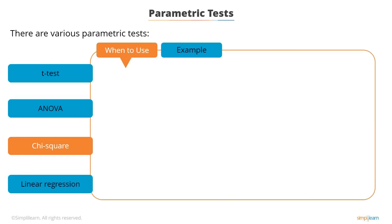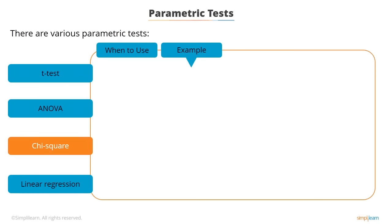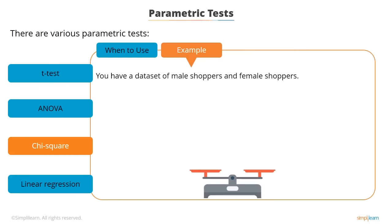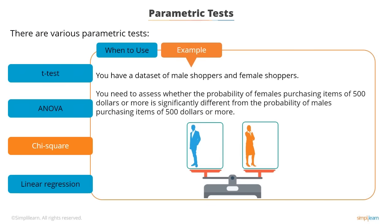Chi-square is a statistical test used to compare observed data with data you would expect to obtain according to a specific hypothesis. For example, given a dataset of male and female shoppers, you can assess whether the probability of females purchasing items of $500 or more is significantly different from the probability of males purchasing items of $500 or more.